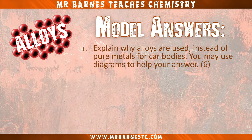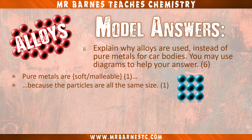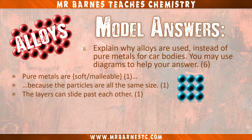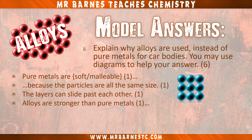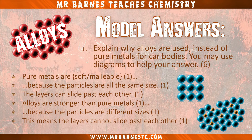Onto part two: explain why alloys are used instead of pure metals for car bodies, using diagrams to help your answer. First, say why you wouldn't want to use a pure metal — that's because they are soft or malleable. Then explain why, saying that they have the same size particles; you can also get this mark by drawing a diagram. The third mark is for saying that they are soft because the layers can slide past each other. Then move on to an alloy and state the main property: they are stronger than pure metals. For the fifth mark, say that the particles are different sizes or draw a diagram. Finally, why are they stronger? Because the layers cannot slide past each other.